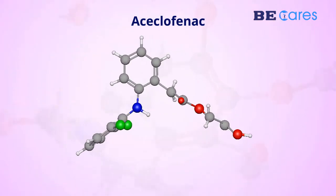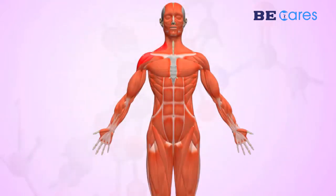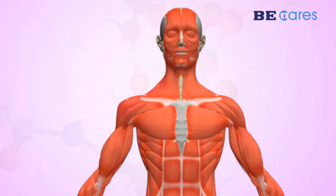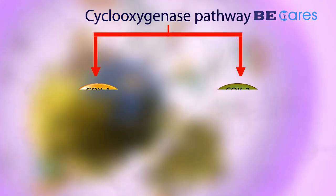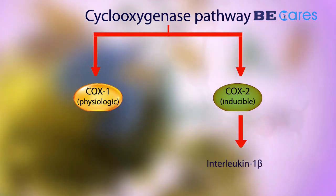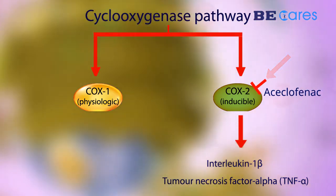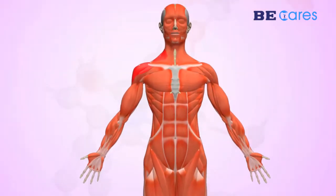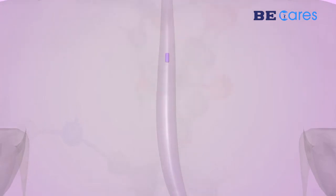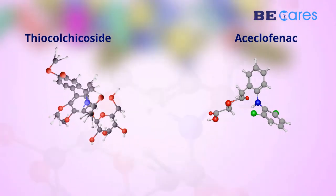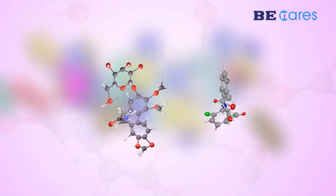Aceclofenac is a phenylacetic acid derivative used in the treatment of symptomatic pain and inflammation in various conditions including acute and chronic pain. It inhibits the synthesis of inflammatory cytokines such as interleukin-1-beta, tumor necrosis factor alpha (TNF-alpha), and prostaglandin E2 production by blocking the cyclooxygenase-2 enzyme, thereby providing sustained pain relief. Aceclofenac is a preferential COX-2 inhibitor that has better GI tolerability compared to other NSAIDs.